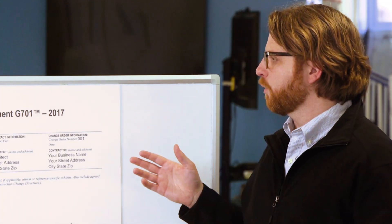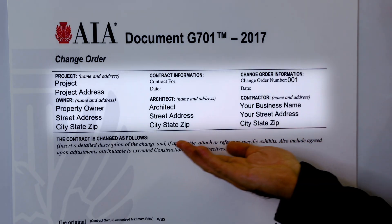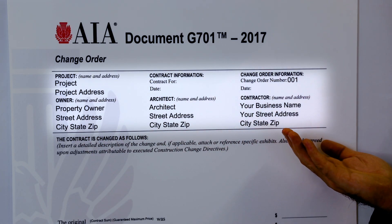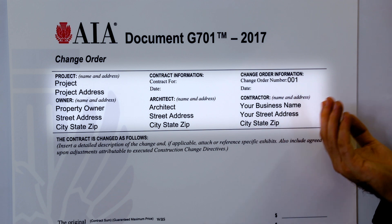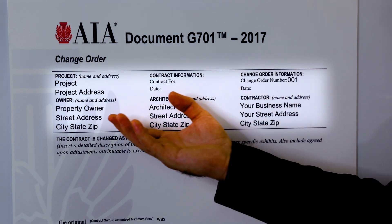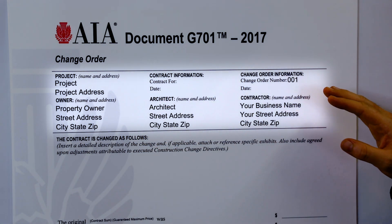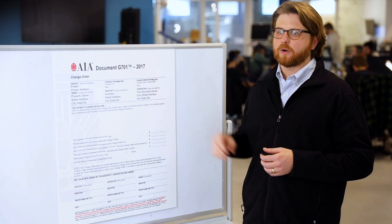At the top of the change order form you'll see the information about the project. This part's pretty self-explanatory. You'll fill in the project information, the owner, the architect, and your name and address — everything that should be pretty standard.